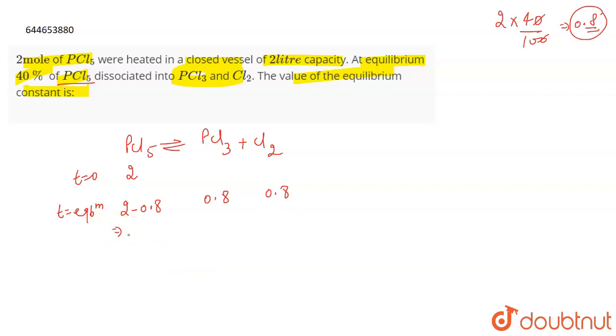2 minus 0.8, which means 1.2 moles. Now for the concentration, we are given the volume. The concentration will be 1.2 by 2, this will be 0.8 by V which is 2 liters, 0.8 by 2, and again 0.8 by 2. We have to find out the value of